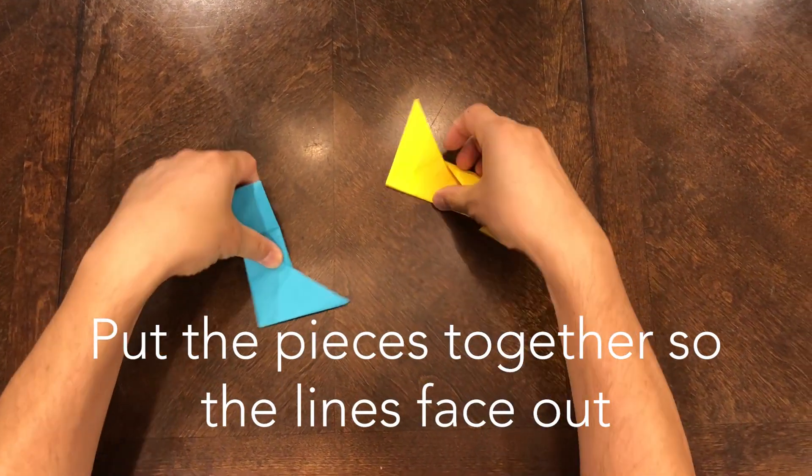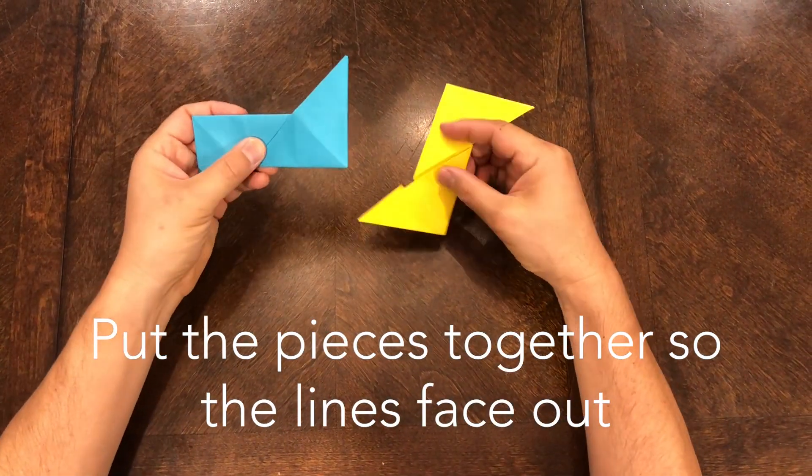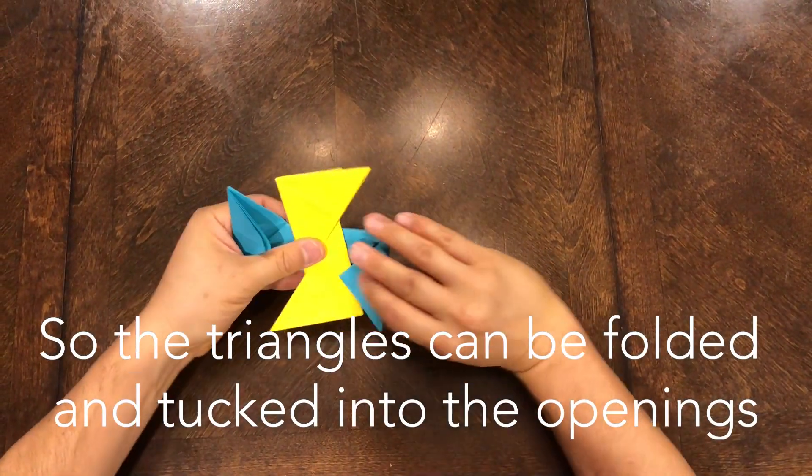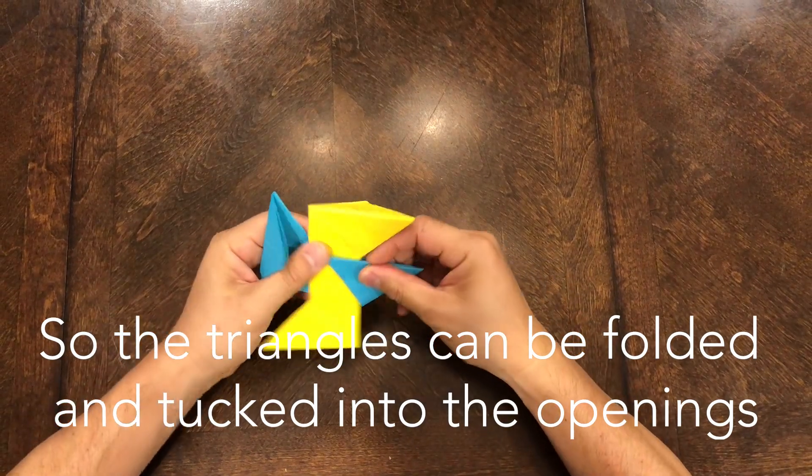Put the pieces together so that the lines face out, so that the triangles can be folded in and tucked into the openings.